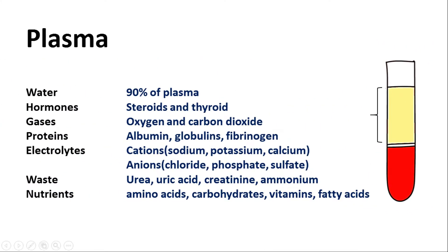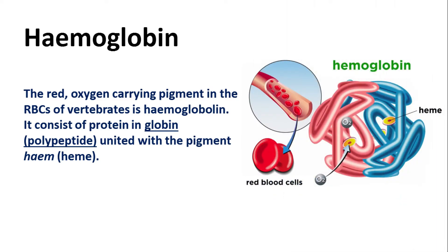Plasma comprises 55 percent of total blood volume. It contains 90 to 92 percent water, while the remaining 1 to 10 percent consists of other materials, including hormones like steroids and thyroid hormones, gases like oxygen and carbon dioxide, proteins like globulins, albumin, and fibrinogen, and electrolytes including various cations and anions. Waste materials include urea, uric acid, creatinine, and ammonium.